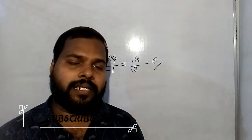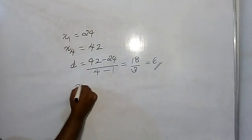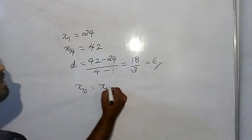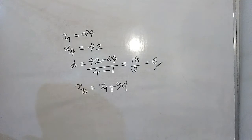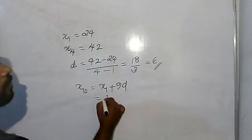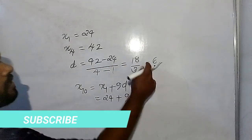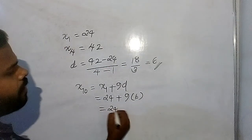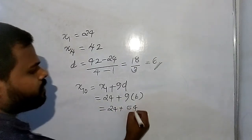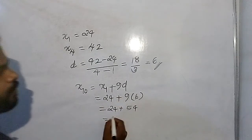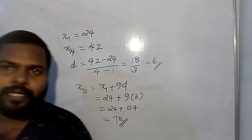The 10th term: a10 equals 24 plus 9 into 6, which is 24 plus 54, equals 78. So the 10th term is 78.